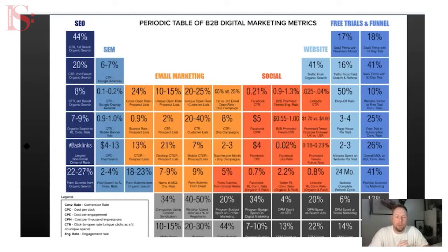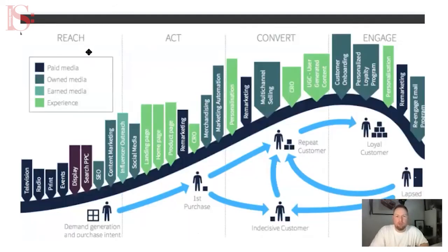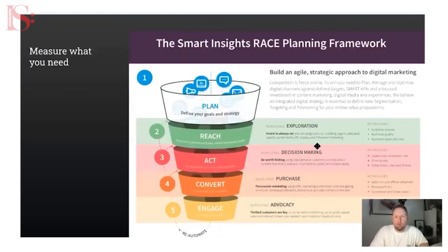I'm not going to go through all these metrics one by one — we'll share this presentation afterwards. But pick the metrics that matter. Going back to the Reach, Act, Convert, Engage framework: reach is about the amount and quality of audience you can get hold of. Act is about how many leads you've generated, how much time they've spent on your website, how many subscribers, likes, and shares you've got — they're acting with your brand.